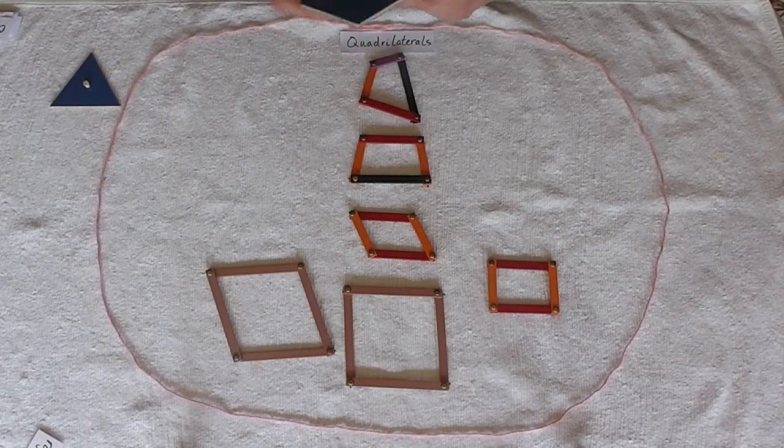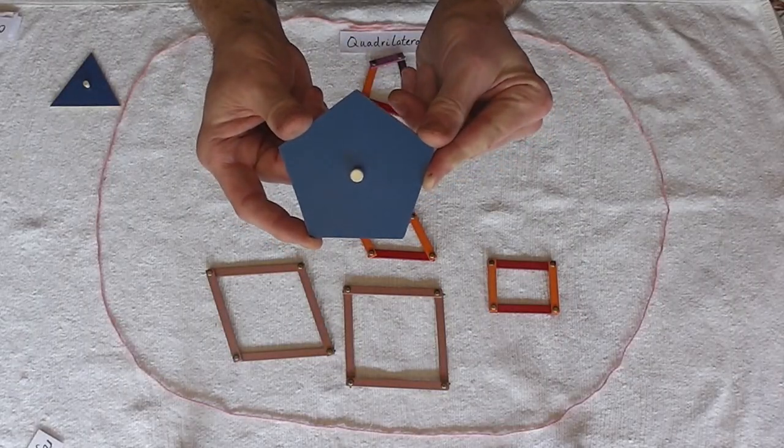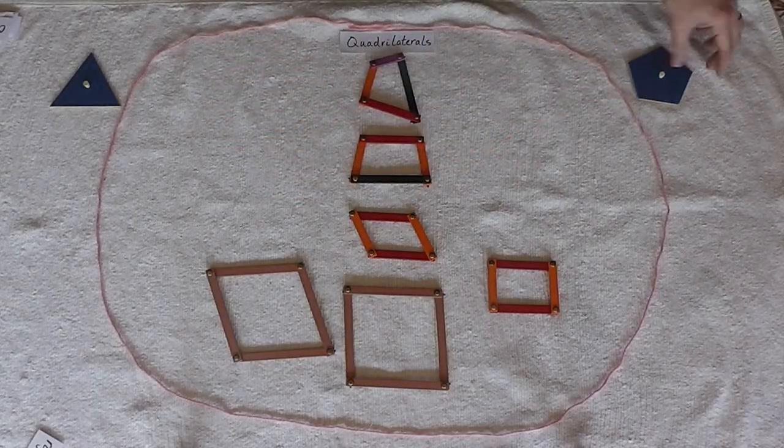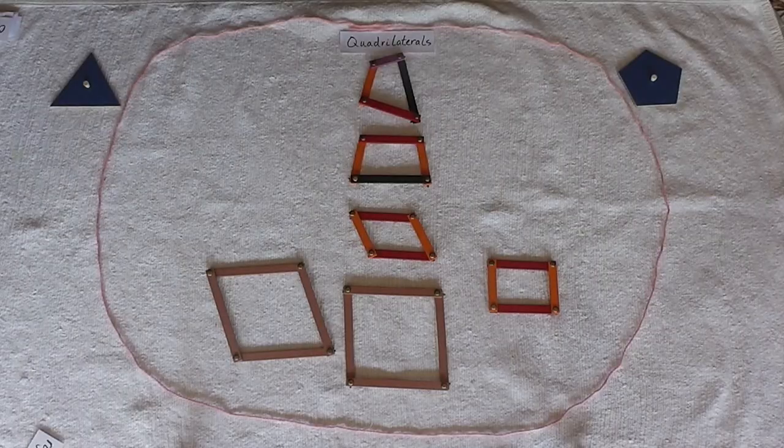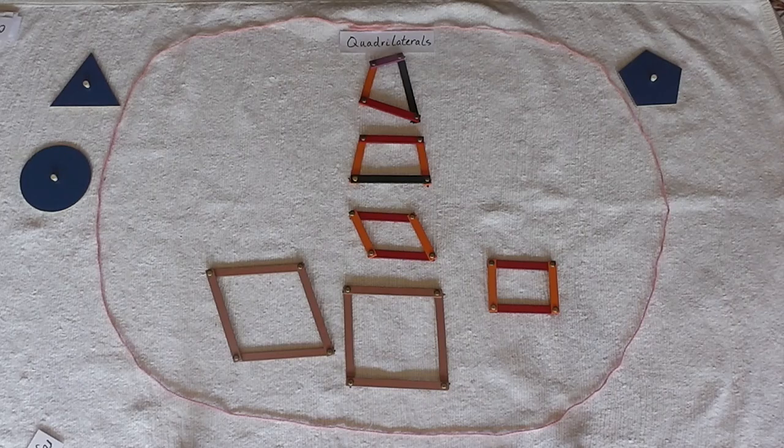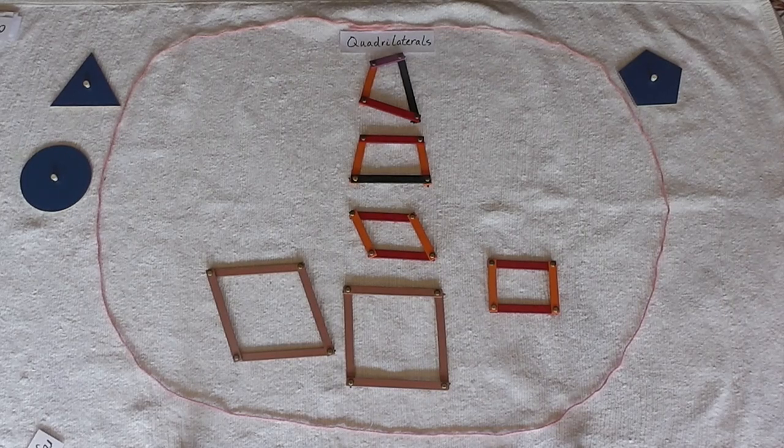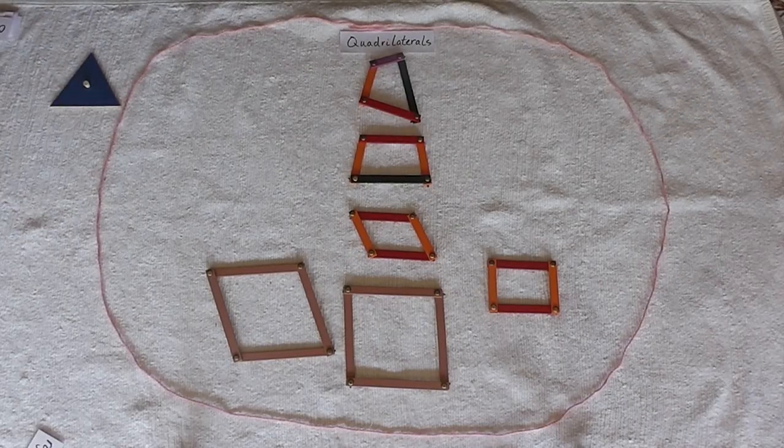I could take another shape like a pentagon which has five sides and the pentagon would not go inside the circle. In fact, the circle wouldn't go inside this circle. So we could think of all different kinds of shapes that would not belong in the circle because they do not have four sides.